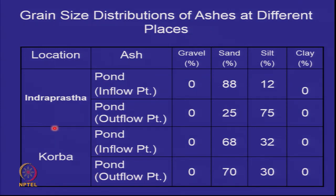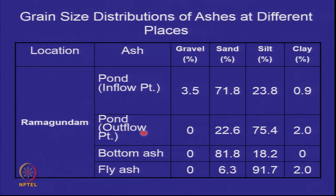Looking at data from different thermal power stations: at the inflow point, sand is approximately 88 percent and silt 12 percent; at the outflow point, silt is approximately 75 percent. Another station shows 68 percent sand at the inflow point, while one outflow point surprisingly shows 70 percent sand — indicating the pipeline was depositing material close to the outflow point. In most other cases, the outflow point has more silt and the inflow point has more sand. Bottom ash data shows about 81 percent sand and some gravel, indicating a slightly larger clinker grinder screen.